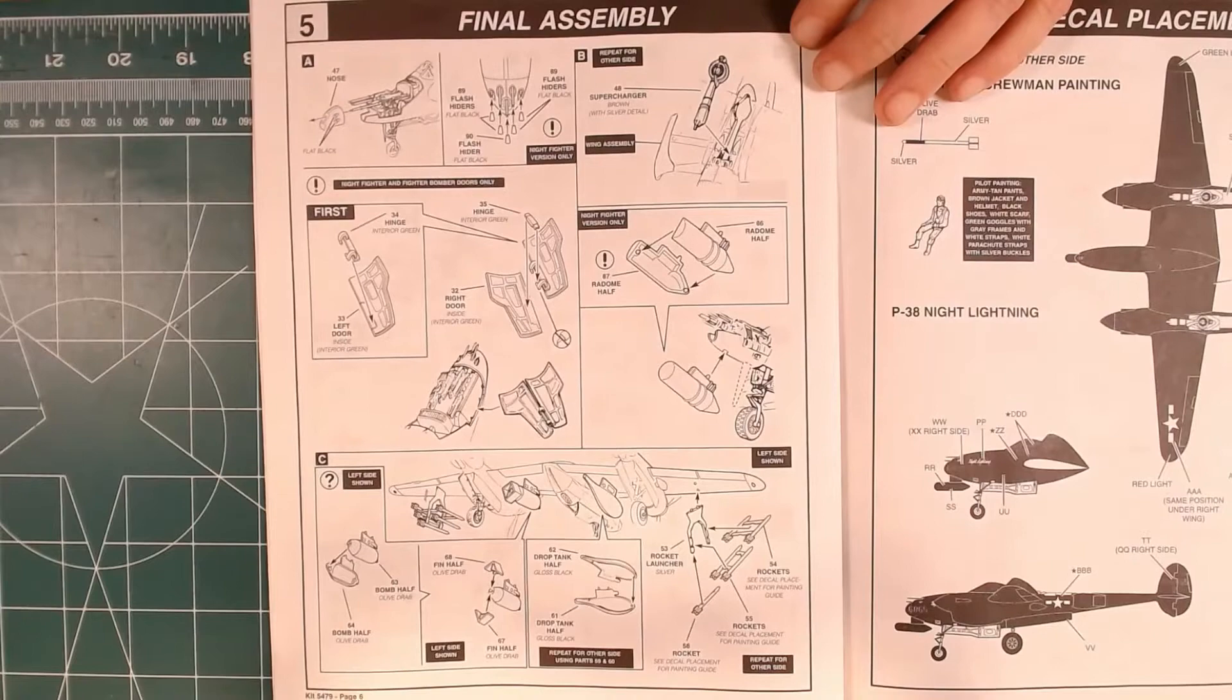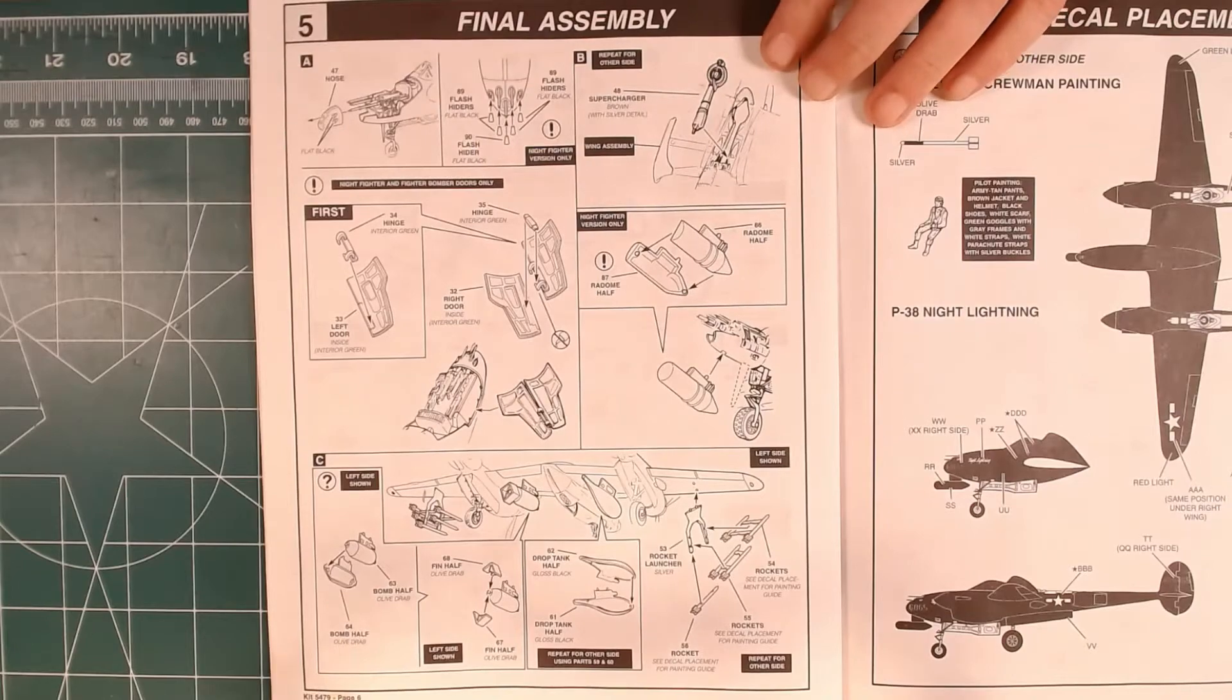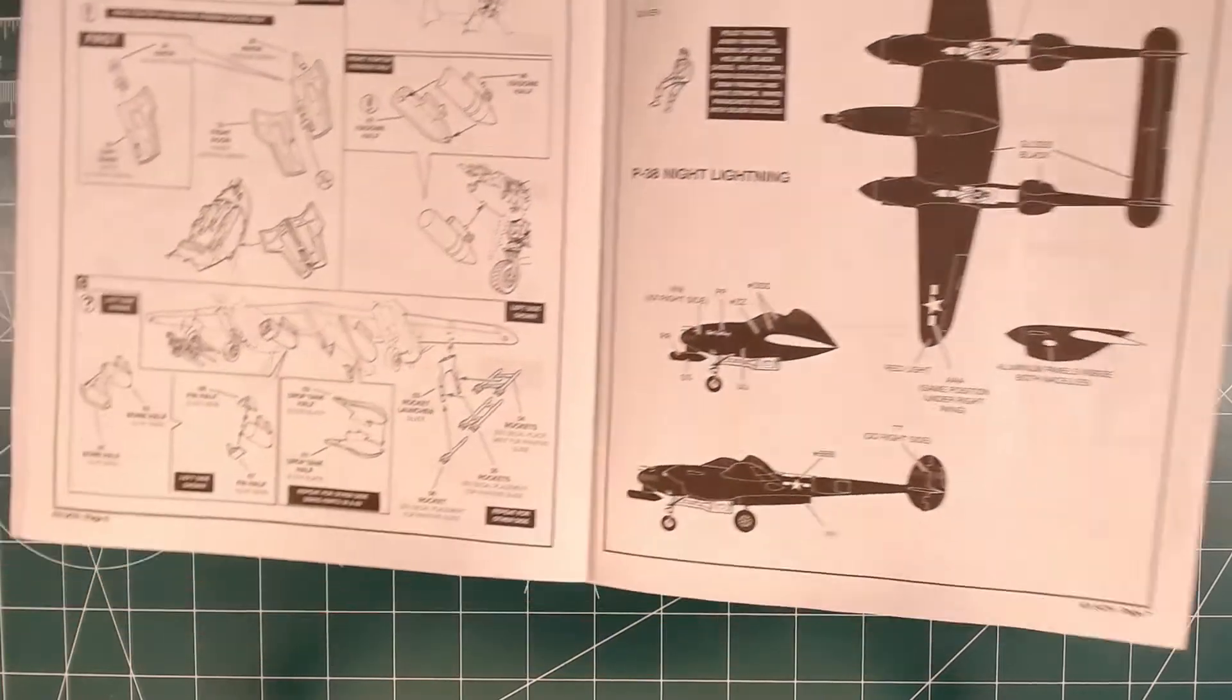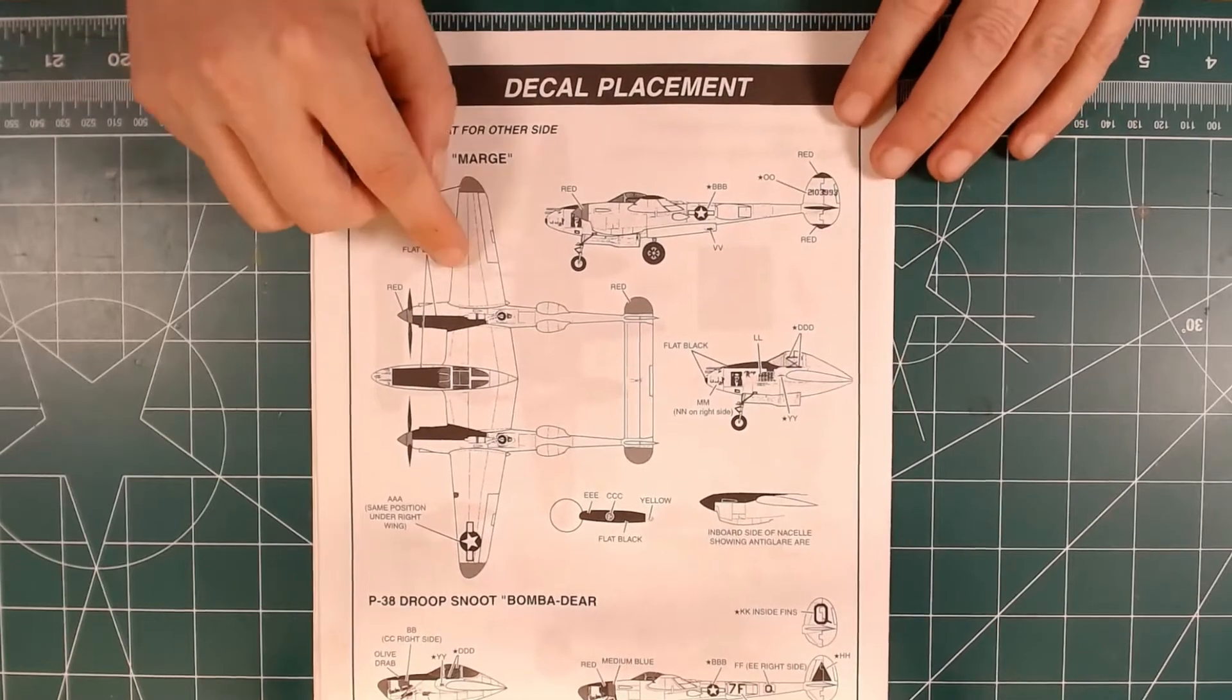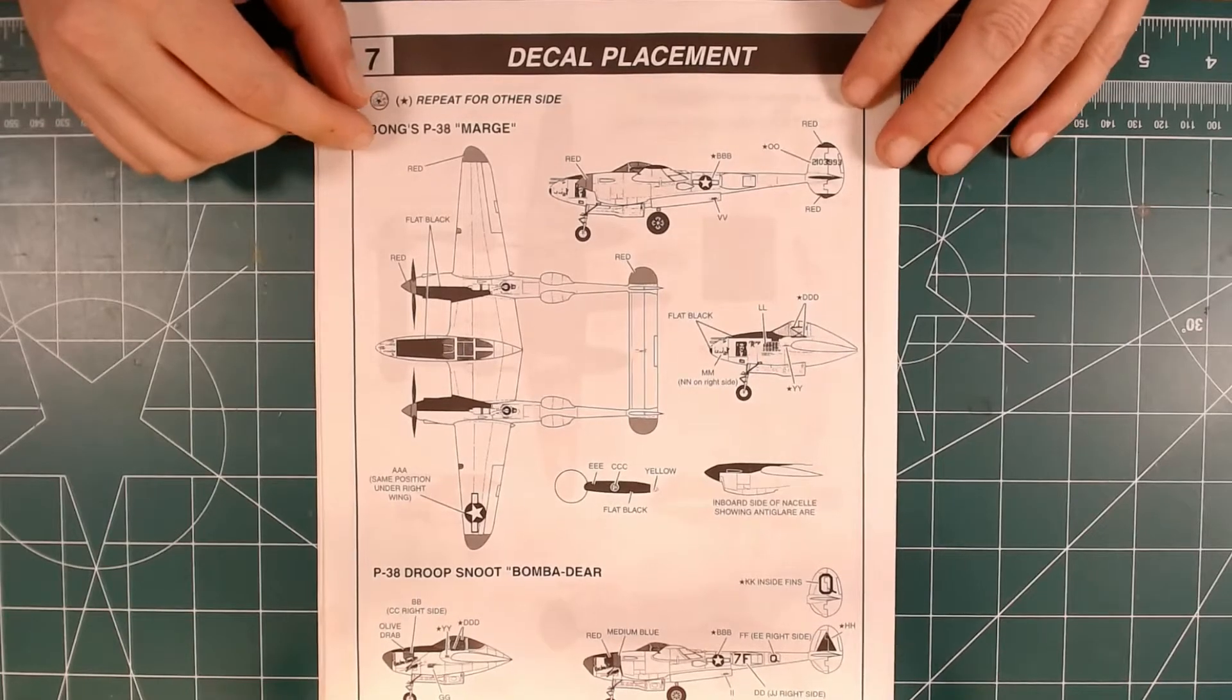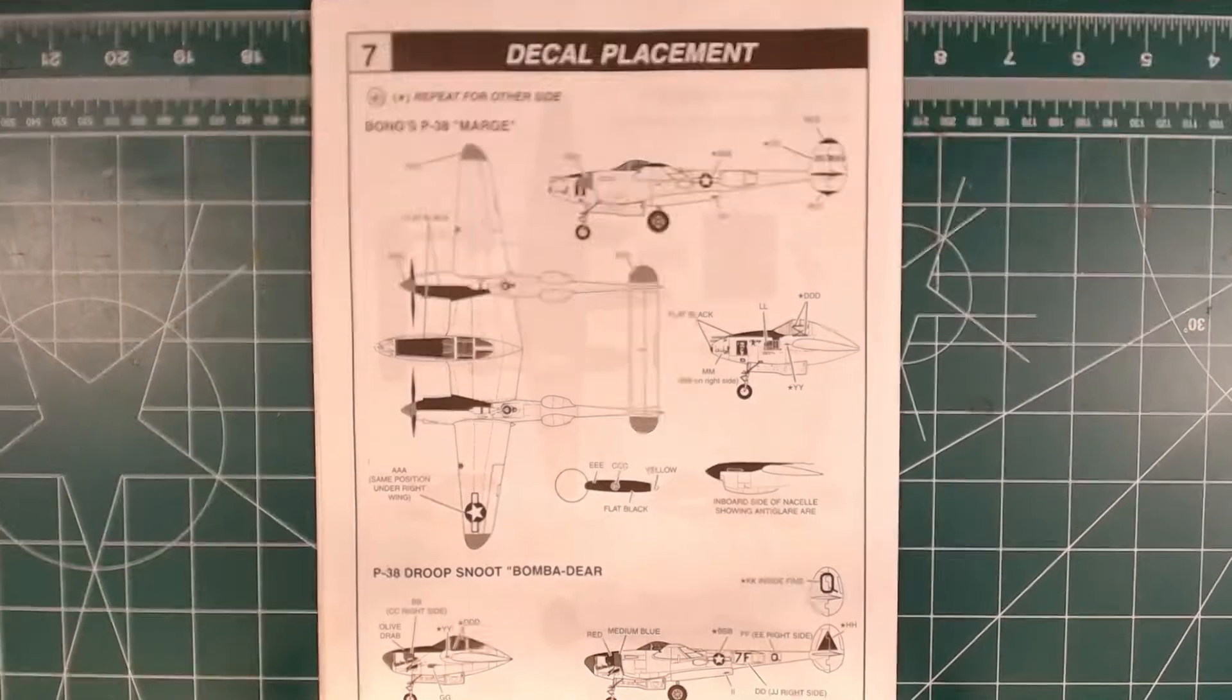Nose cone. Turbochargers. And so on. So this is the P-38 Night Lightning. This is the Night Bomber. That one gets painted black. Then this is the version that we're going to do, Marge, which was Richard Bong's P-38 in World War II in the South Pacific. And then there's the P-38 Droop Snoot Bombardier, which was a bomber.